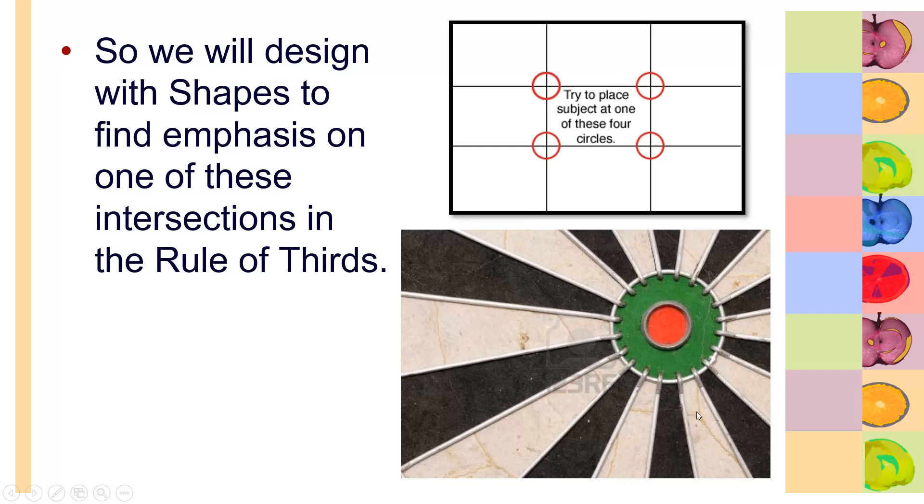Even this picture of an actual bullseye target is following the rule of thirds in photography and design. Look, the bullseye is not in the middle of the design space. No, no, no. It is actually on the upper right-hand hot spot. So that is our goal - to make things stand out through size, through shape, through position, through how you orient or turn your objects. But also, where do we place them? We place them somewhere not in the center, but on one of those intersections of hot spots.